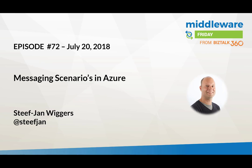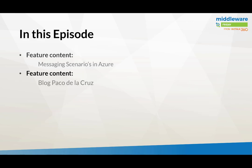Hi, welcome to episode 72 of Midwest Friday, July 20th, 2018 - Messaging Scenarios on Azure. We haven't done that much recording lately because it's summertime. Currently in the Netherlands during this recording, it's actually 30 degrees Celsius outside, so it's quite hot. We're kind of living in the tropics the last couple of weeks.